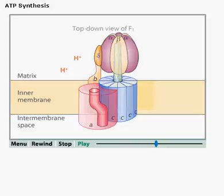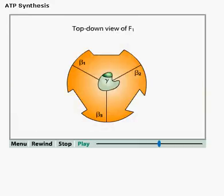Rotation of gamma relative to the fixed alpha-beta-3 hexamer causes each beta subunit to cycle through three conformational states. Here, we focus on the beta-1 subunit.